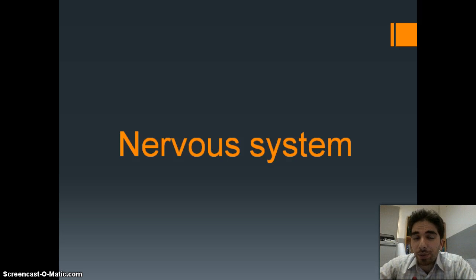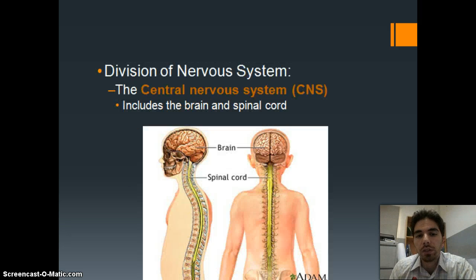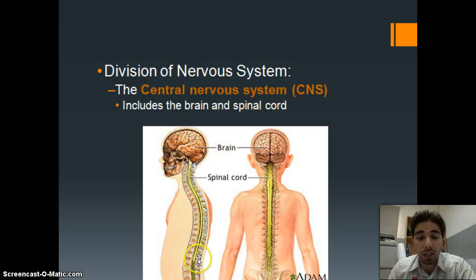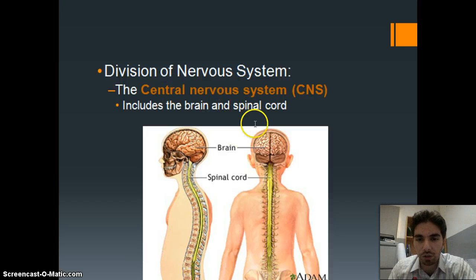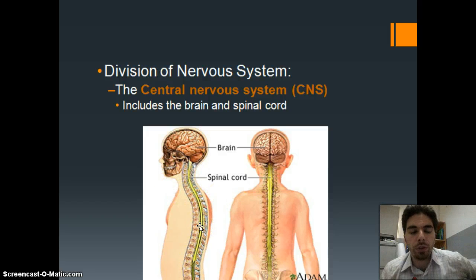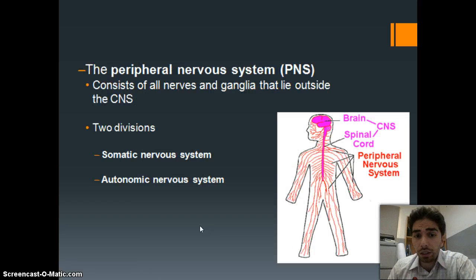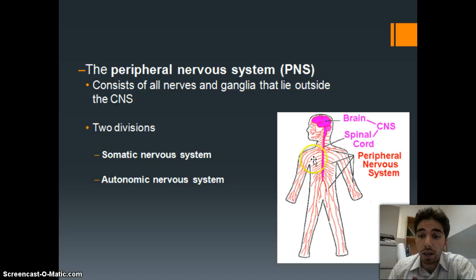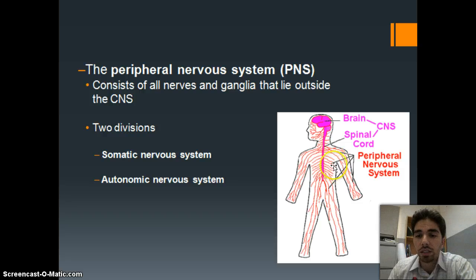What you need to know about the nervous system first: there are two parts. Either the CNS, which is the central nervous system, consisting of the brain and the spinal cord. The brain is inside the skull and the spinal cord is inside the vertebral column, which is our spine or backbone. The second part is the PNS, or the peripheral nervous system, where all the nerves and neurons outside of the CNS are located.